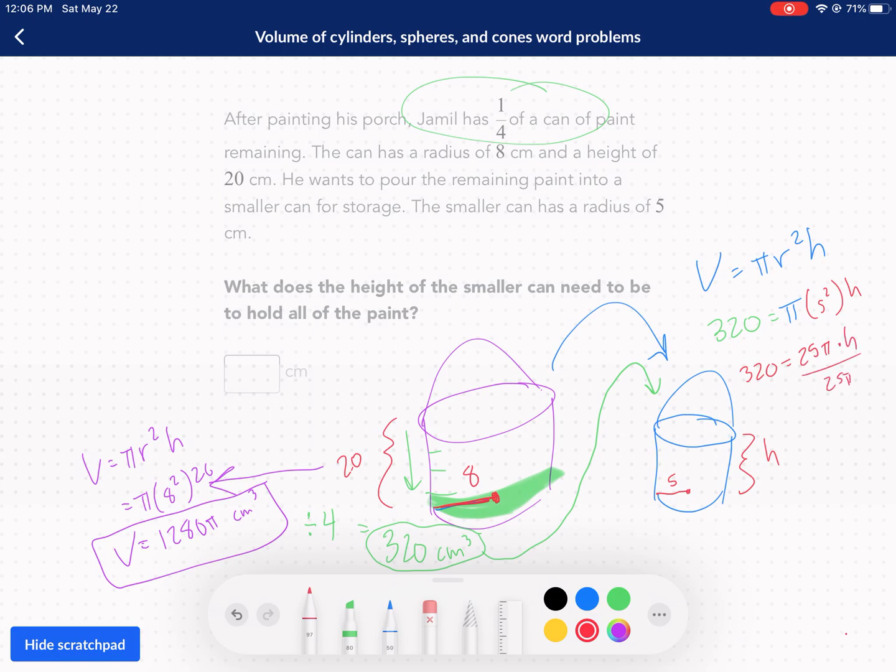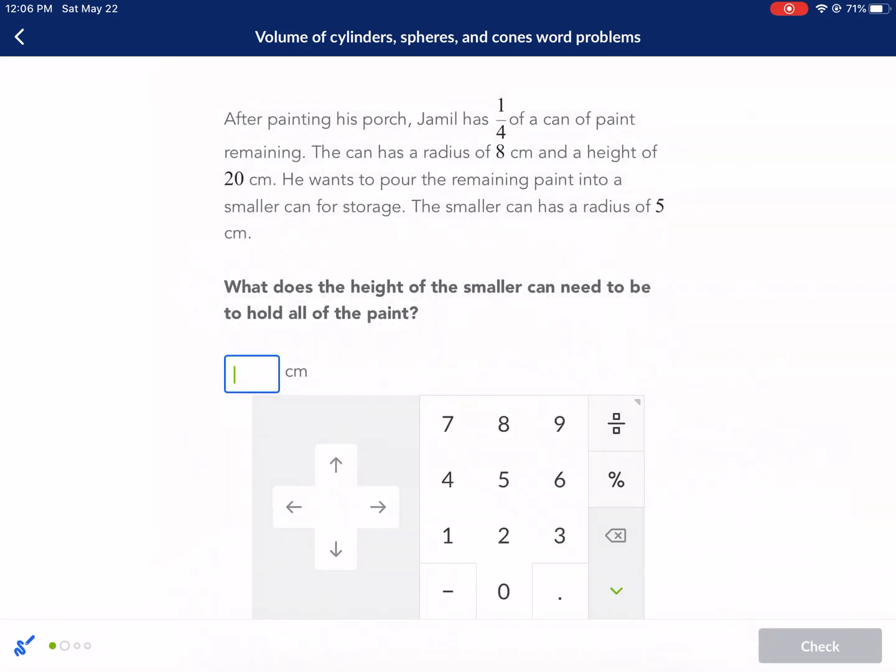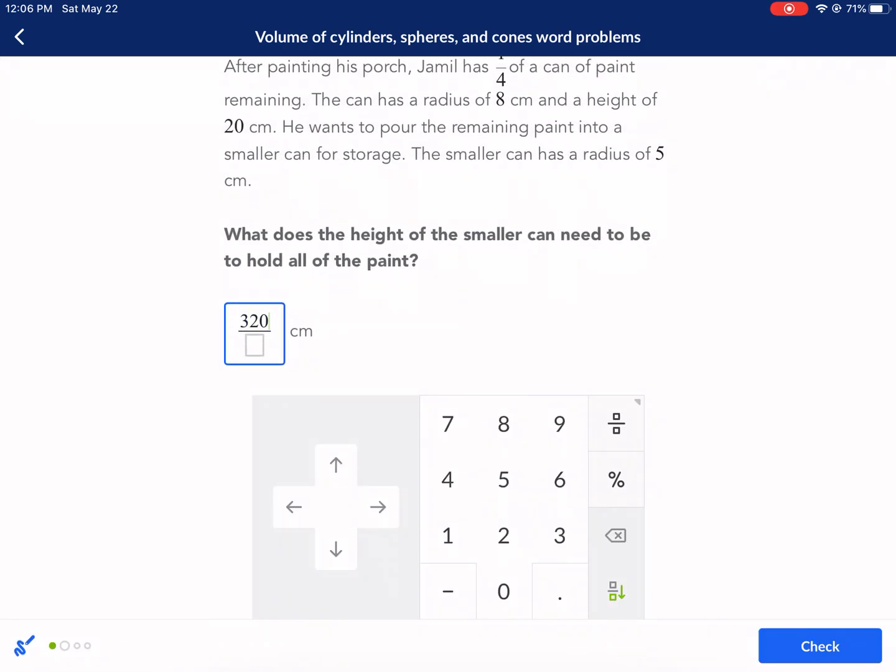So we have 320. We're going to simplify here. 320 equals 25π times h. Well, we need to divide by 25π to both sides. And that will get h by itself after we cancel out those things. So our h is equal to 320 over 25π. I'm not sure if that's going to let us leave it as a decimal or a fraction. I'm going to try. First off, I wrote that π in the wrong spot. That π has got to be in the numerator.